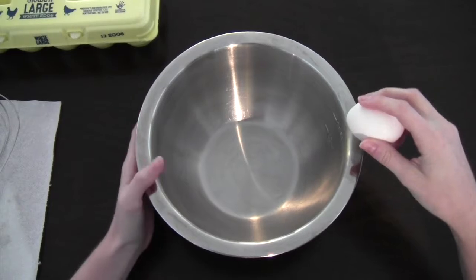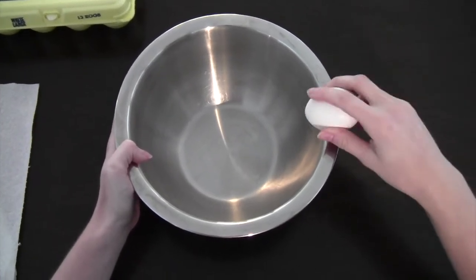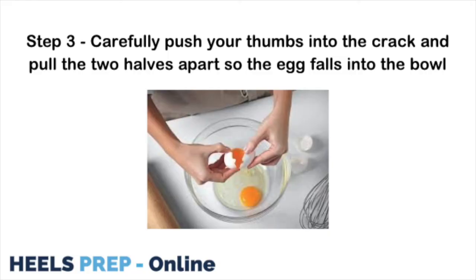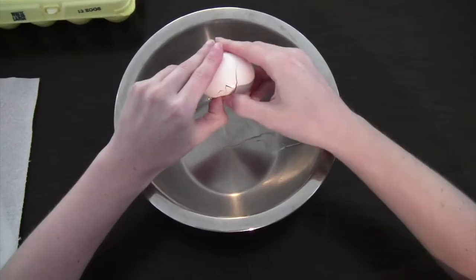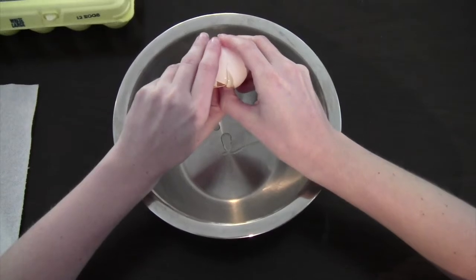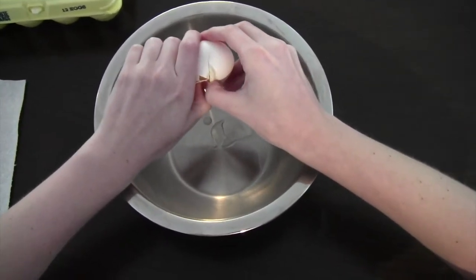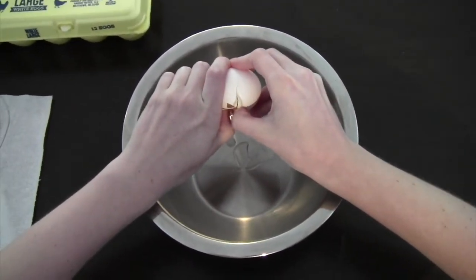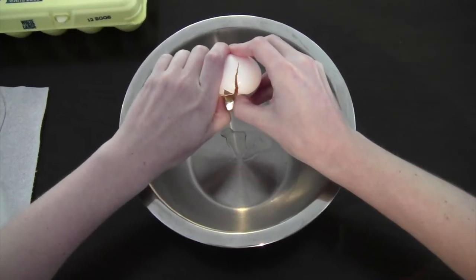And it may take a couple taps. And then you're going to put your thumbs into that crack. And you're just going to pull the two halves apart and tilt them over so the egg drops in.